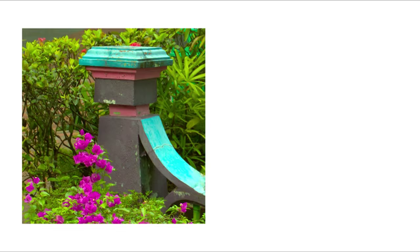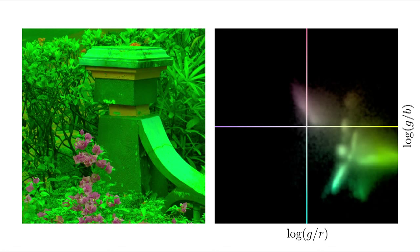We present a technique for correcting the color of an image. Under certain conditions, tinting an image results in a translation of a log chrominance histogram of that image, as shown here.